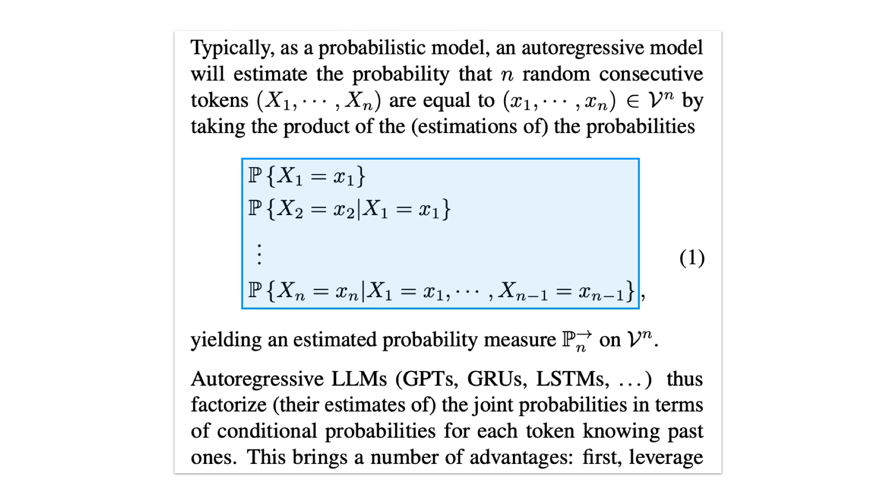Then we'll sample an x2 conditioned on the value of x1, sample an x3 conditioned on the tuple x1, x2, and so on. This is known as autoregressive prediction, where each newly generated token gets fed back in as input to the model during the next step. The last token, xn, will be conditioned on the previous tokens already generated.